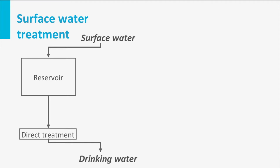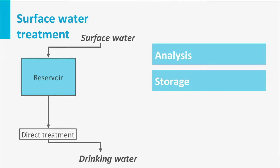Direct treatment of surface water is preceded by storage in reservoirs. These reservoirs have different functions. First, they are needed for analysis. When river water is contaminated, some time is needed to measure it in the laboratory. After feedback, the abstracted river water can be discharged without contaminating the rest of the stored water. Second, the reservoirs have a storage function. As long as the river remains contaminated, the stored water can be used without interrupting the drinking water supply. Obviously, during this period the level of the reservoirs will drop. Finally, the reservoirs have a purification function, so-called autopurification.